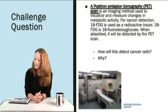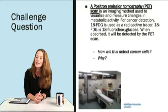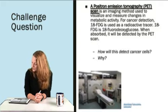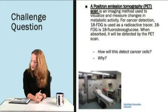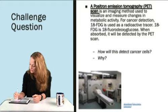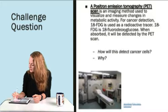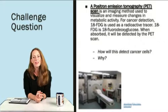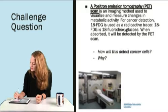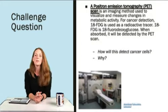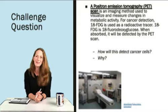18-FDG is 18-fluorodeoxyglucose. When absorbed, it will be detected by the PET scan. So why do you think this irradiated glucose can be useful to detect cancer cells compared to normal cells? Think about it for a second.